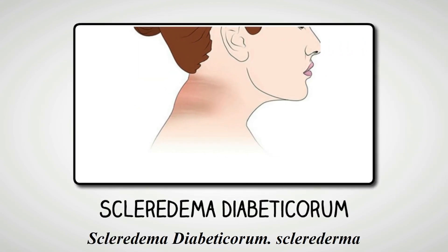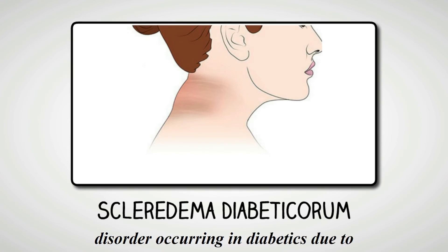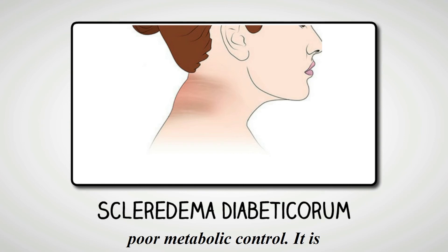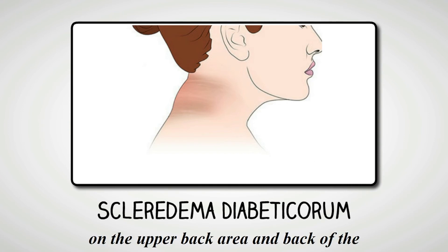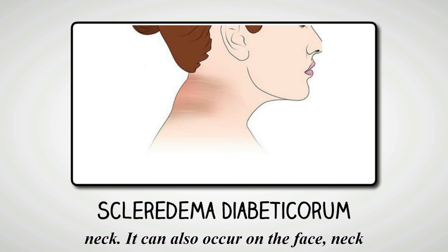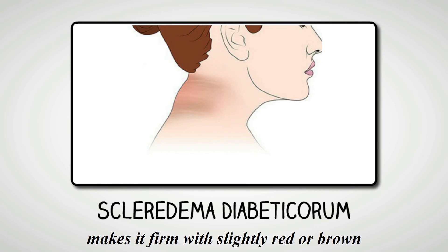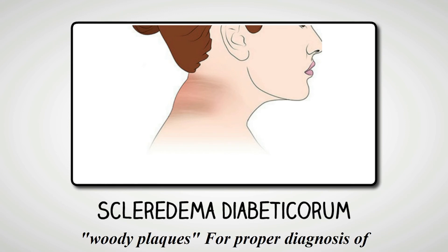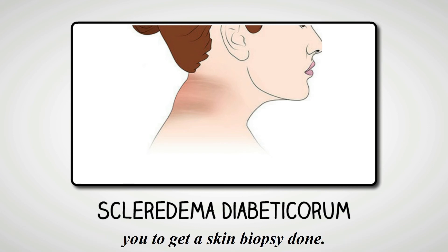Scleroderma Diabeticorum. Scleroderma Diabeticorum is a rare connective disorder occurring in diabetics due to poor metabolic control. It is characterized by thickening of the skin on the upper back area and back of the neck. It can also occur on the face, neck and trunk. The hardening of the skin makes it firm with slightly red or brown woody plaques. For proper diagnosis of this condition, your doctor will advise you to get a skin biopsy done.